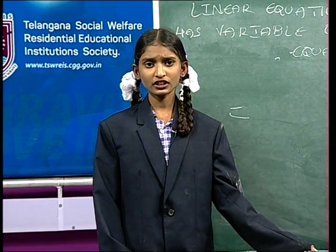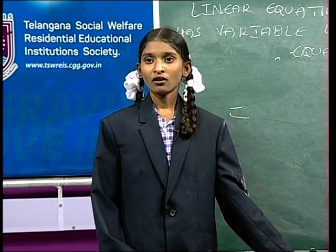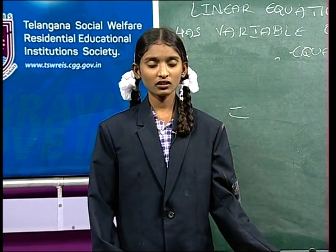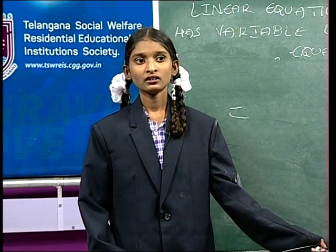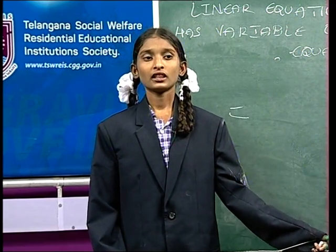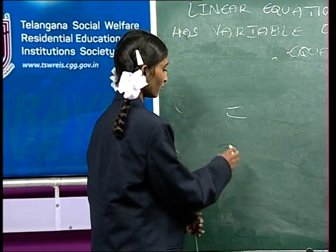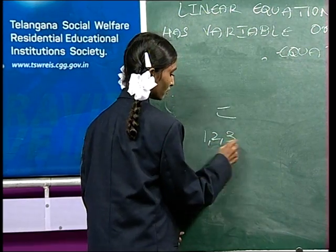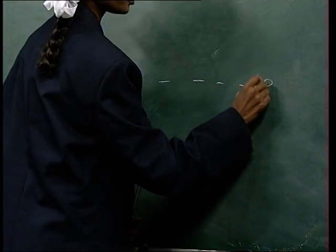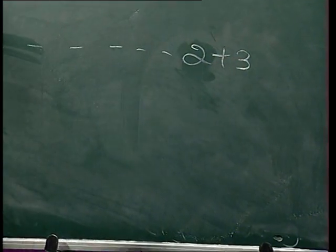Do you know the definition of numerical term? Okay. If every expression has constant term, then it is called numerical expression. For example, 1, 2, 3. Then 2 plus 3. This is called numerical expression.